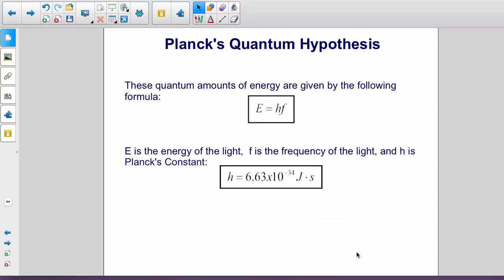Planck described these energy quanta with the following formula. E, the energy, is equal to HF, where F is the frequency. And H is called Planck's constant. H equals 6.63 times 10 to the negative 34 joule seconds. And as we'll find, this is one of the fundamental constants of nature and one that we'll be using a lot as we go forward.